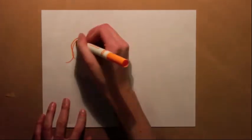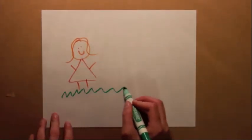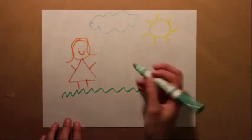So, imagine you're sitting in your room drawing a picture. You start with a girl. She's standing outside, so next you draw the grass, the sun, and the clouds. But it's missing something, so you decide to draw flowers.